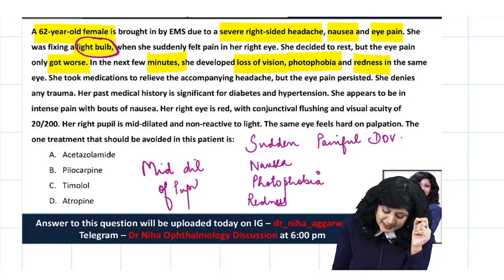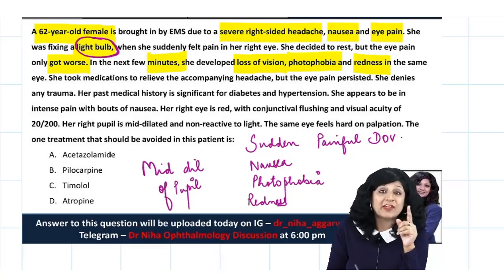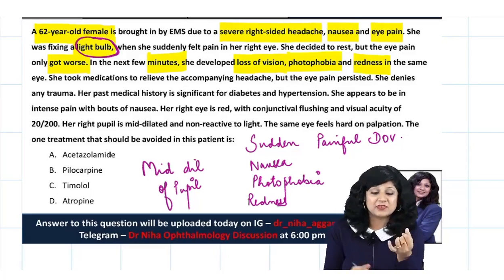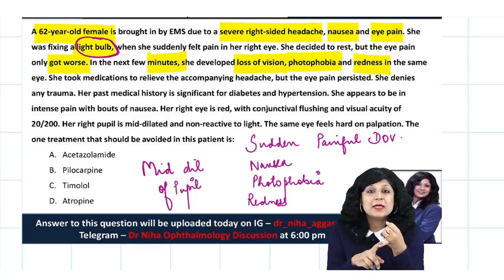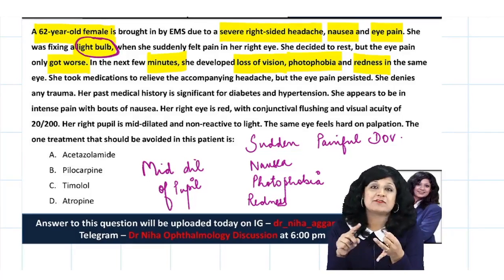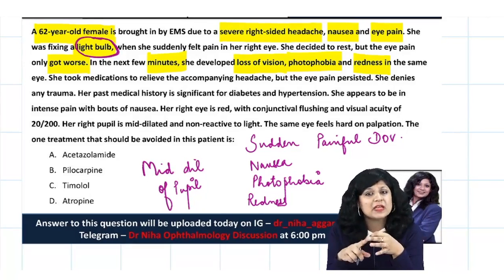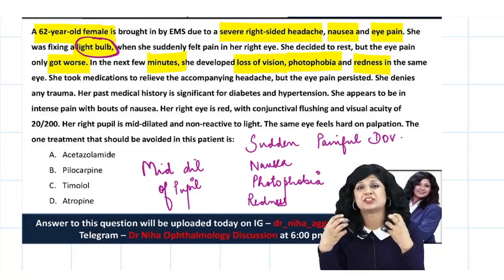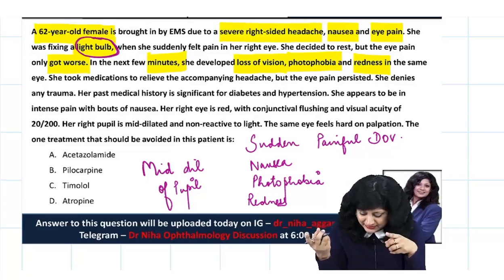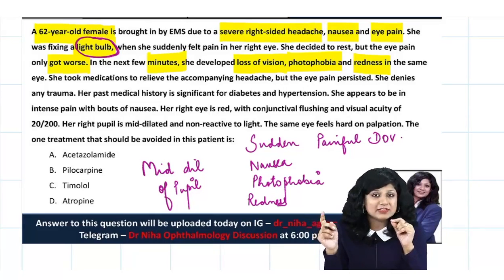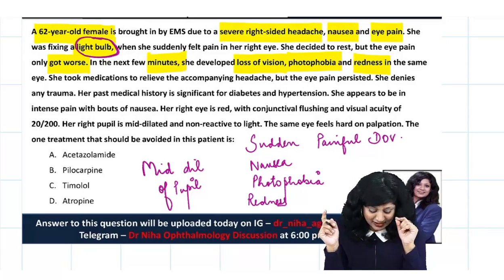So you are getting so many risk factors — you have to comprehend them together. We have sudden painful diminution of vision, nausea, photophobia, redness, and dilation of the pupil.